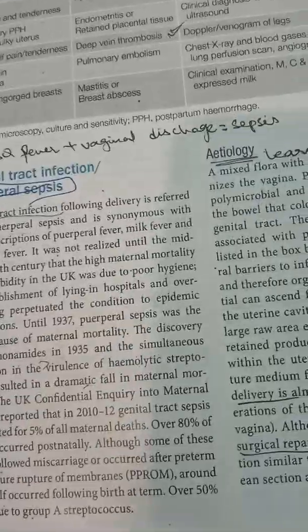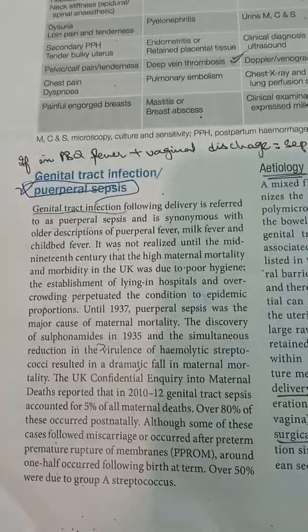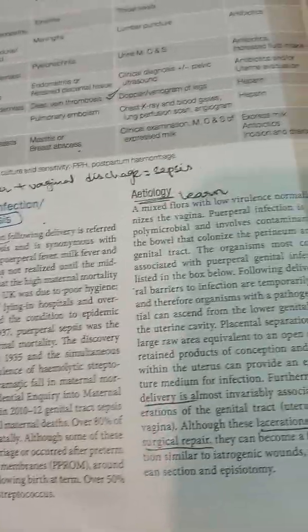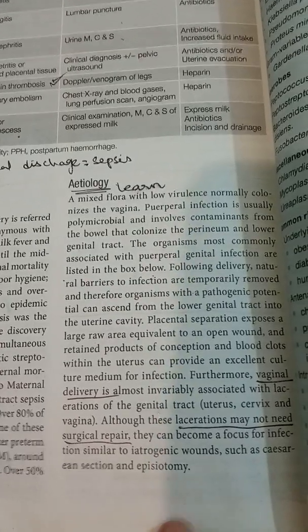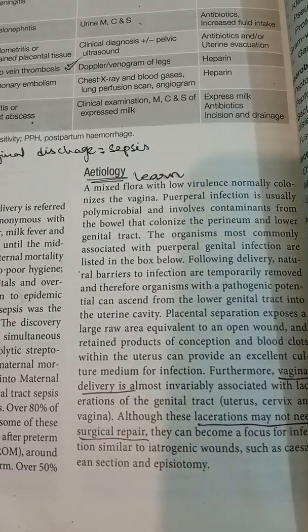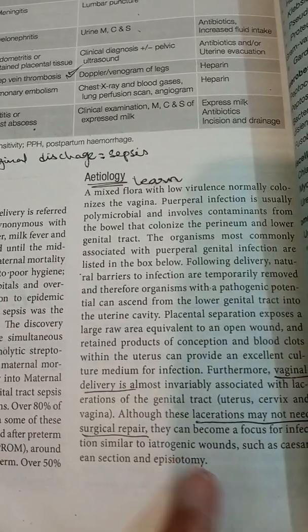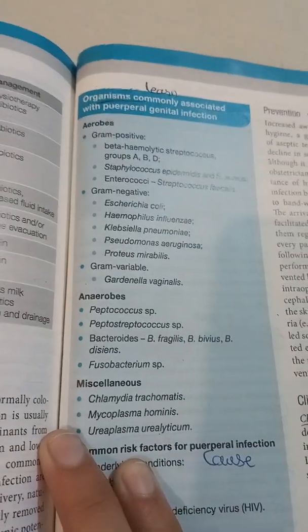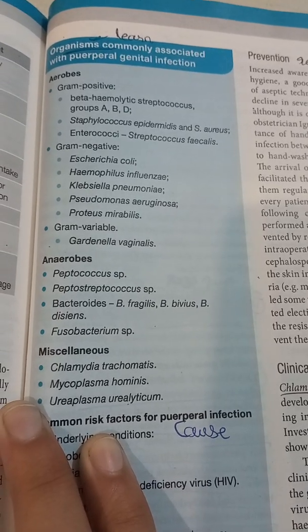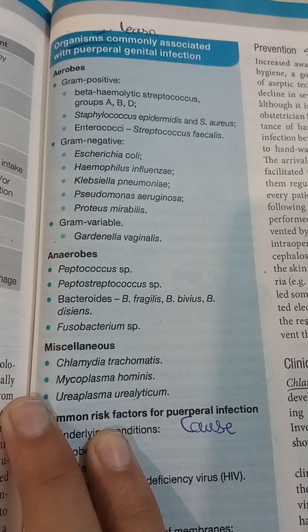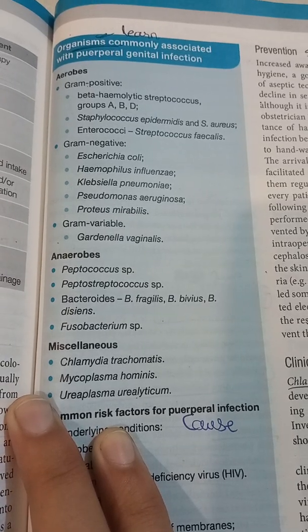Genital tract infection and puerperal sepsis: during vaginal birth and prolonged labor, lacerations in the genital tract can become a focus of infection. Causative organisms include aerobic gram-positive organisms such as beta-hemolytic streptococci group A, B, D, Staphylococcus epidermidis, Staphylococcus aureus, Enterococcus, Streptococcus fecalis; and gram-negative organisms such as E. coli, Haemophilus influenzae, Klebsiella pneumoniae, Pseudomonas, and Proteus.